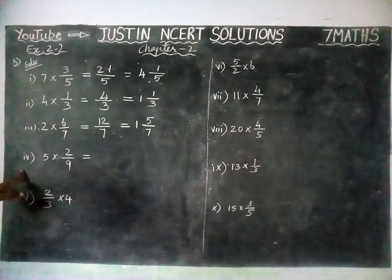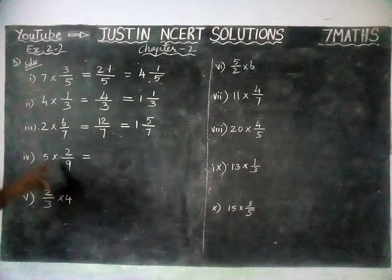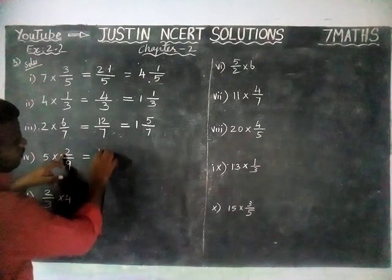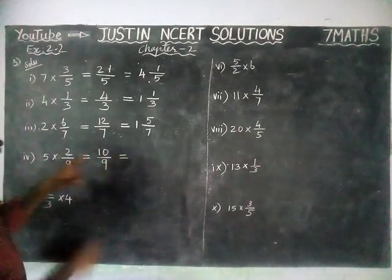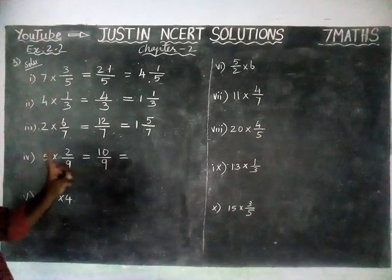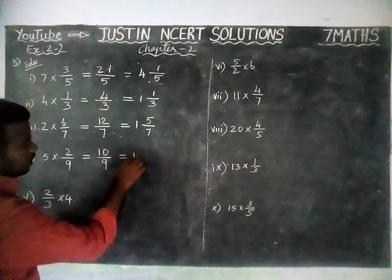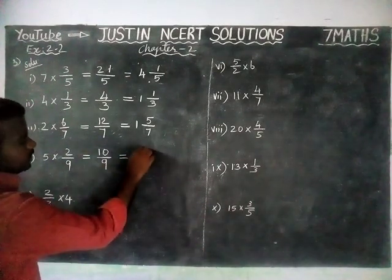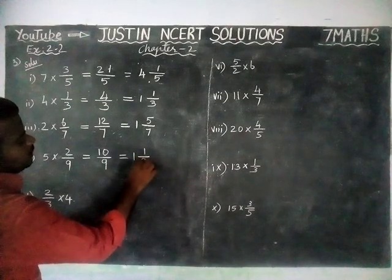4th question: 5 into 2 by 9. 5 twos are 10, divided by 9. In 10, there is only one 9, so we write 1. The remainder 1 is written in the numerator divided by 9. The answer is 1 and 1 by 9.